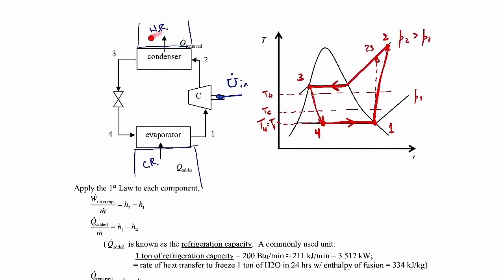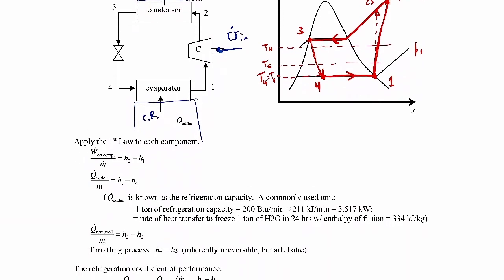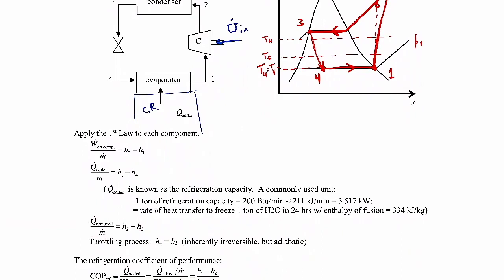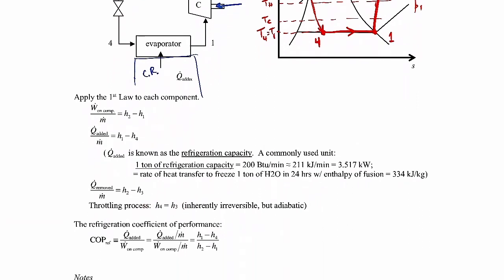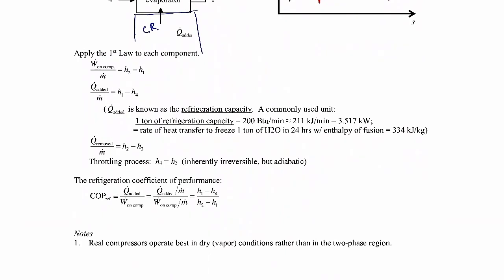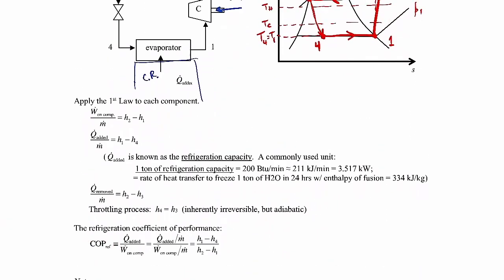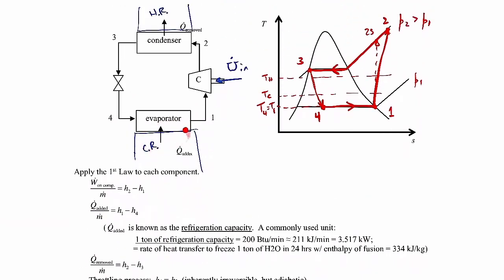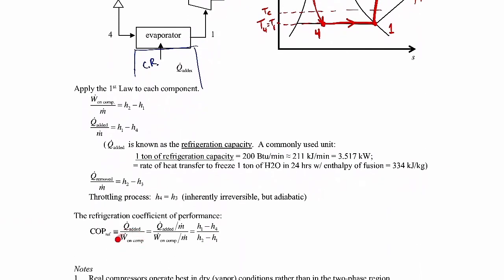The heat removed is the heat from the condenser going into the hot reservoir — into your kitchen if it's a refrigerator. You apply the first law to find that value. For the throttling valve, we know the specific enthalpy remains the same across it. A typical merit of performance for a refrigeration cycle is the coefficient of performance (COP), defined as the heat added into the working fluid divided by the compressor power input. You can express this in terms of specific enthalpies using the above expressions — all of this analysis we're familiar with.